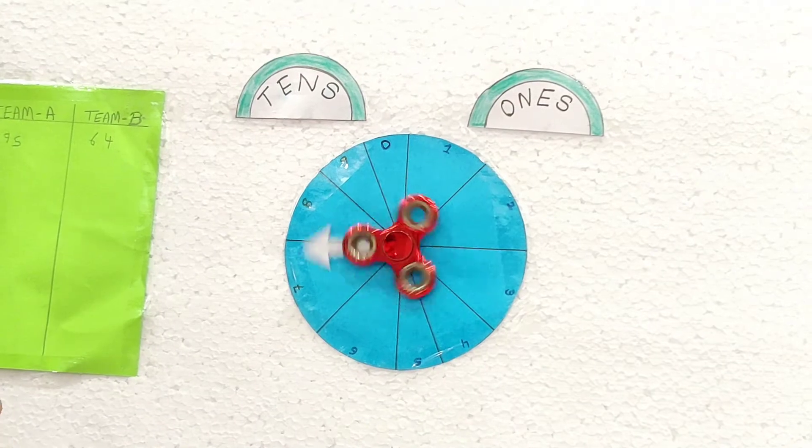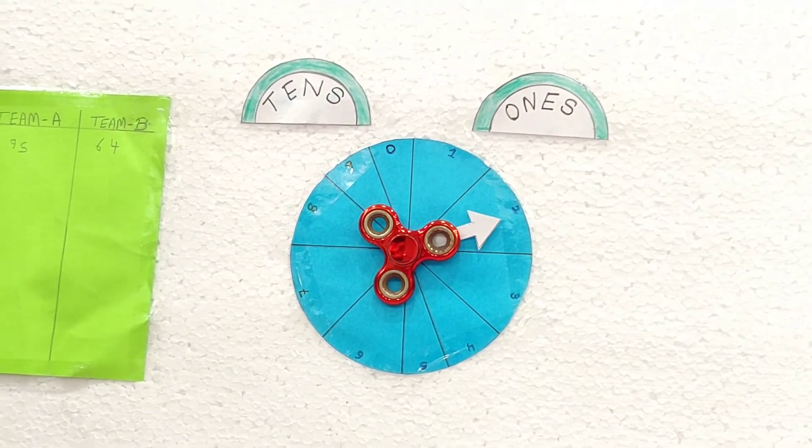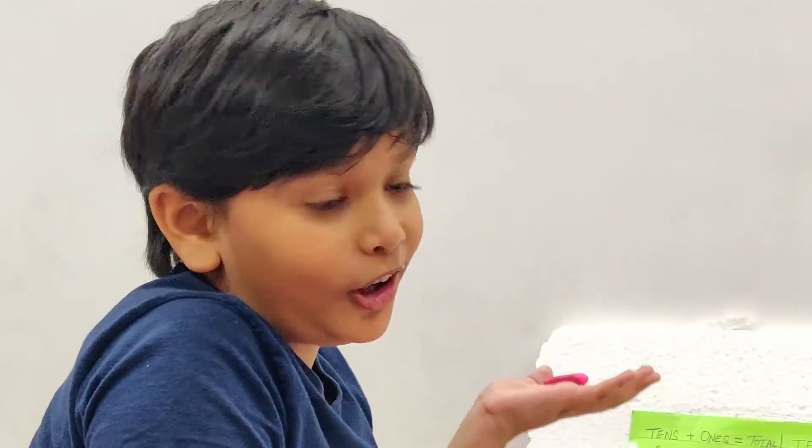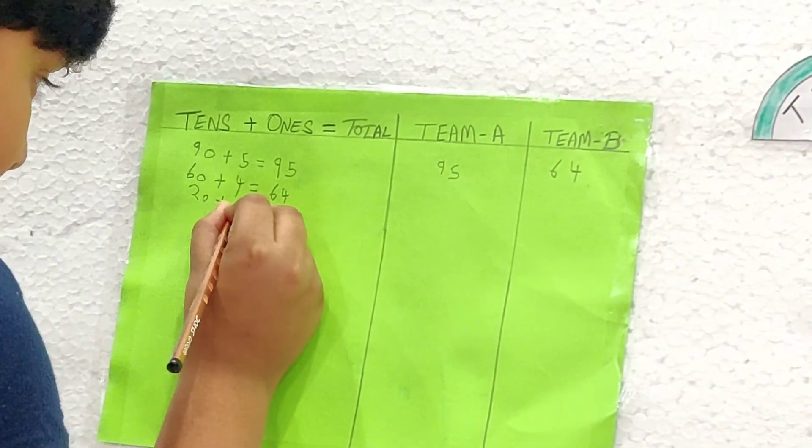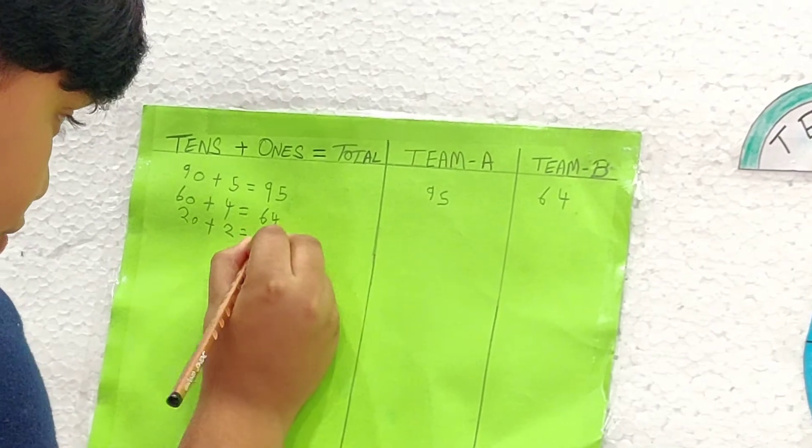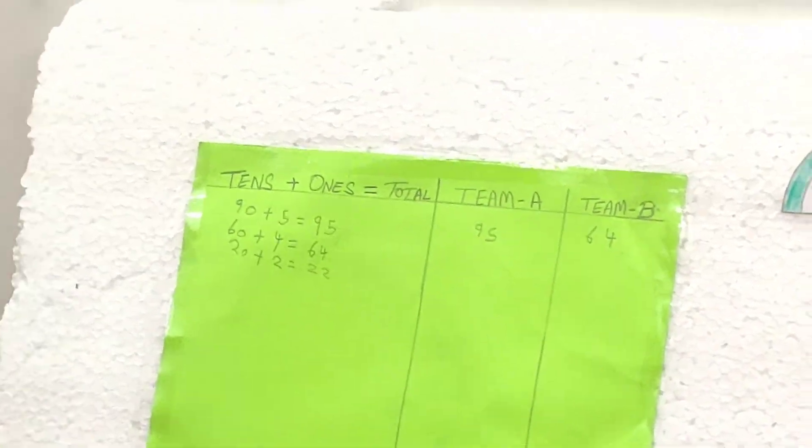We will do it at 0, then spin the wheel again. We got 2 again. Oh God. So it will be 20 plus 2 is equal to 22. This time A team gets 22 points.